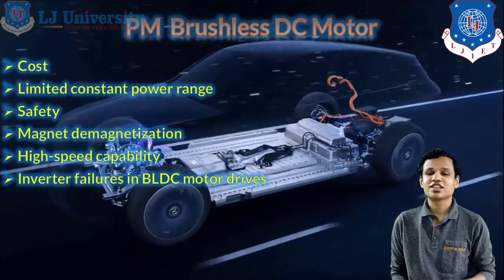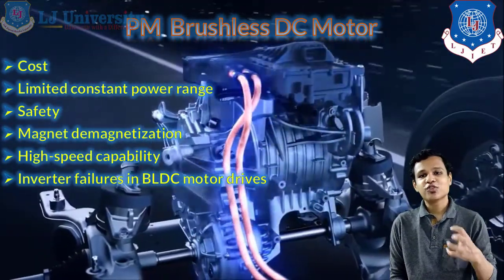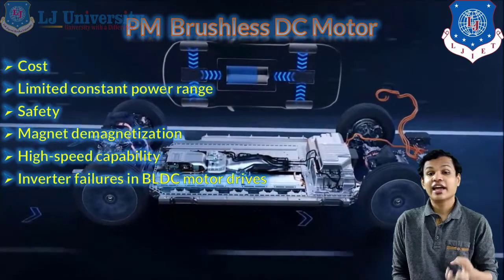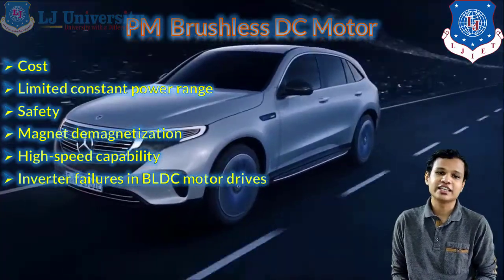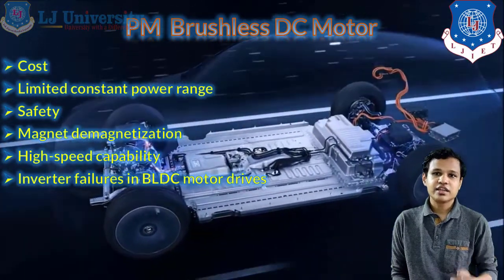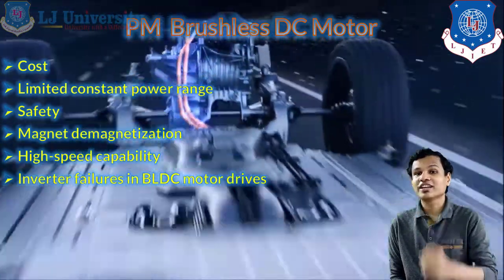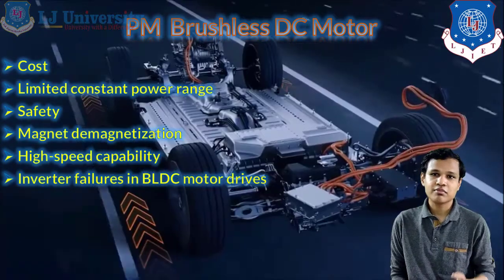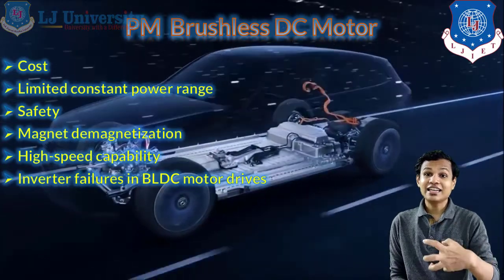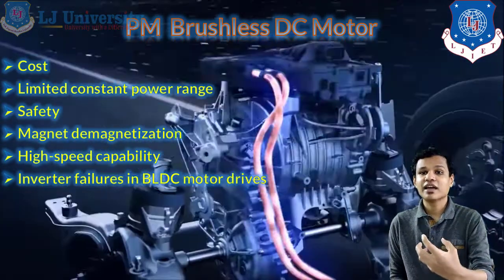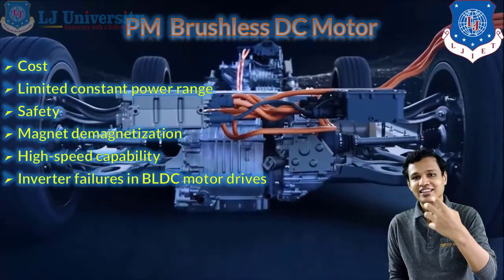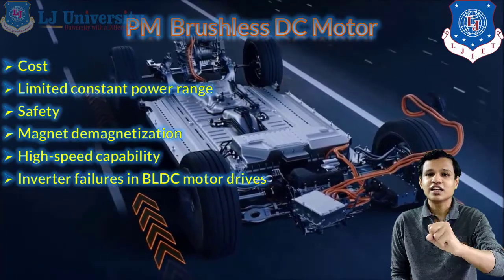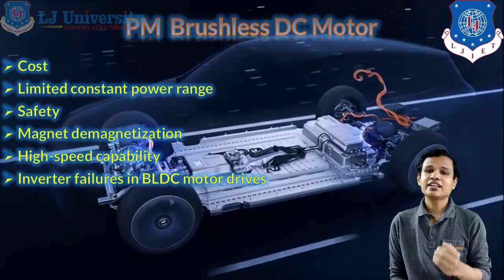There are also some disadvantages of the PM brushless DC motor. The main one is the higher cost, since permanent magnets are expensive and the brushless arrangement adds further complexity and cost. There is also a limited constant power range — beyond a certain limit the power cannot be increased. Safety is a big concern because the permanent magnets can demagnetize over time. Additionally, the high-speed capability of this motor is very limited, which is a drawback for electric vehicles.